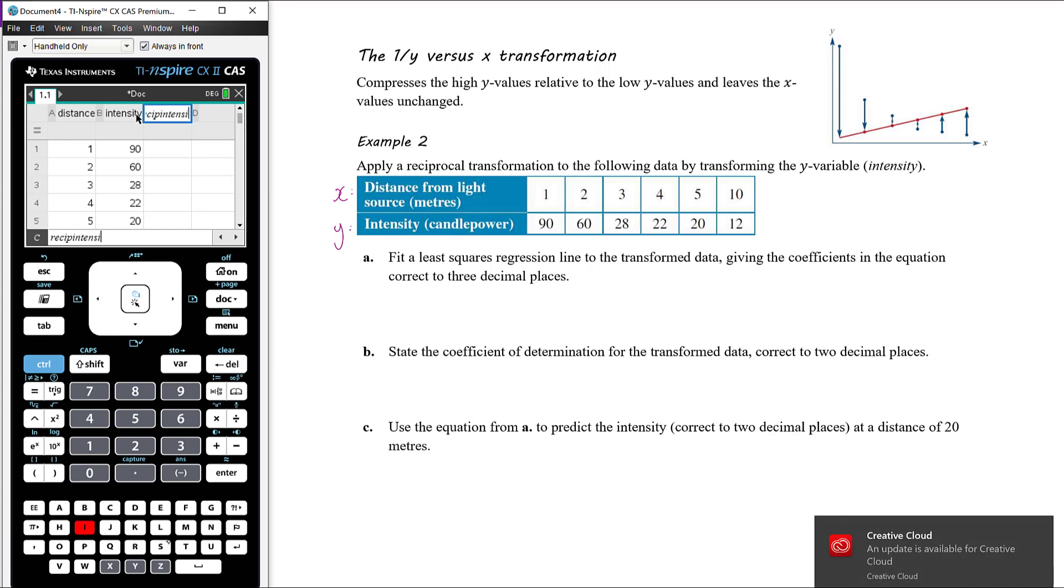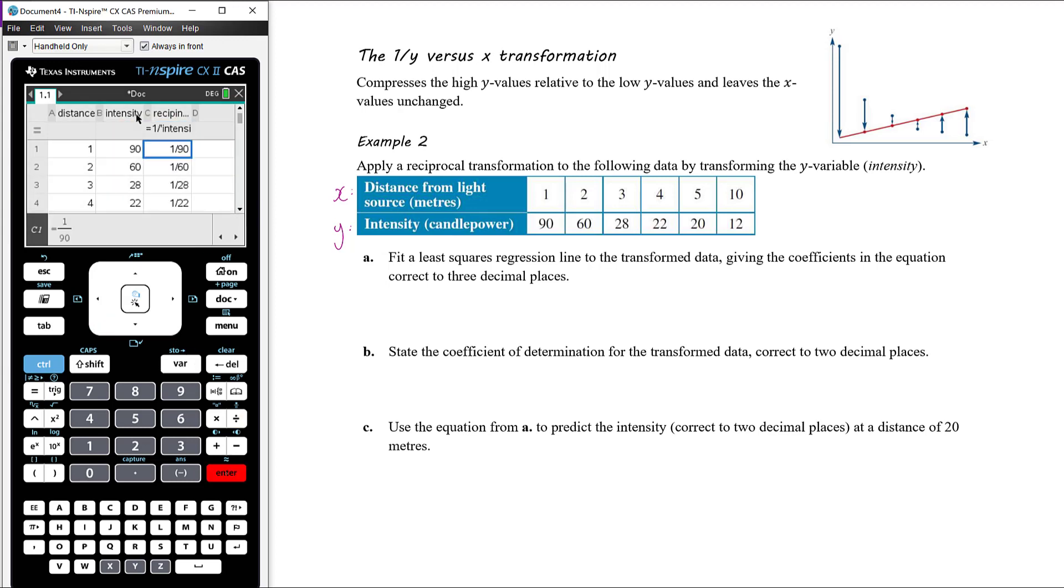We want to find the reciprocal of the intensity, so I'm going to get a new column in my spreadsheet. Reciprocal of the intensity. In the formula bar, we're going to write equals, and we've got one divided by intensity. You can press your variable button to get intensity. There we've got one over the intensity. You can see that literally there: where the intensity is 90, reciprocal of the intensity is 1 over 90; 60 is 1 over 60; 28 is 1 over 28.